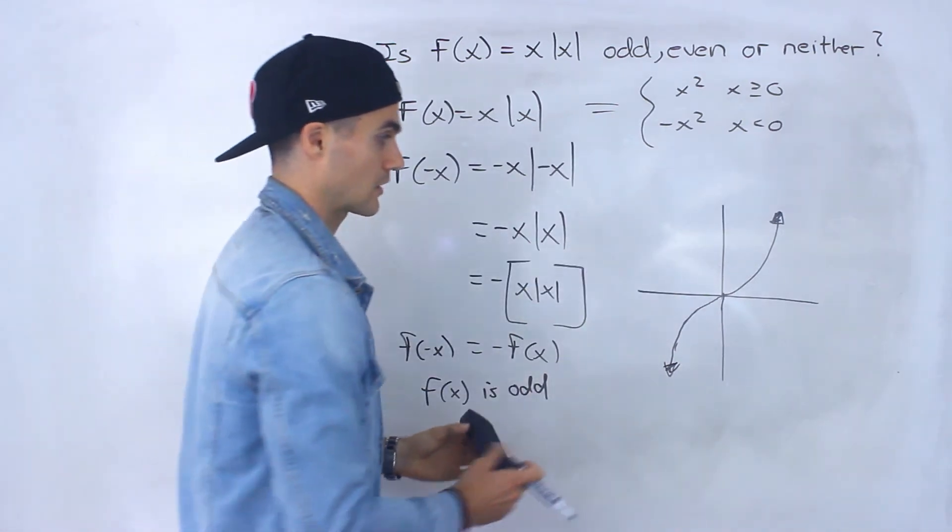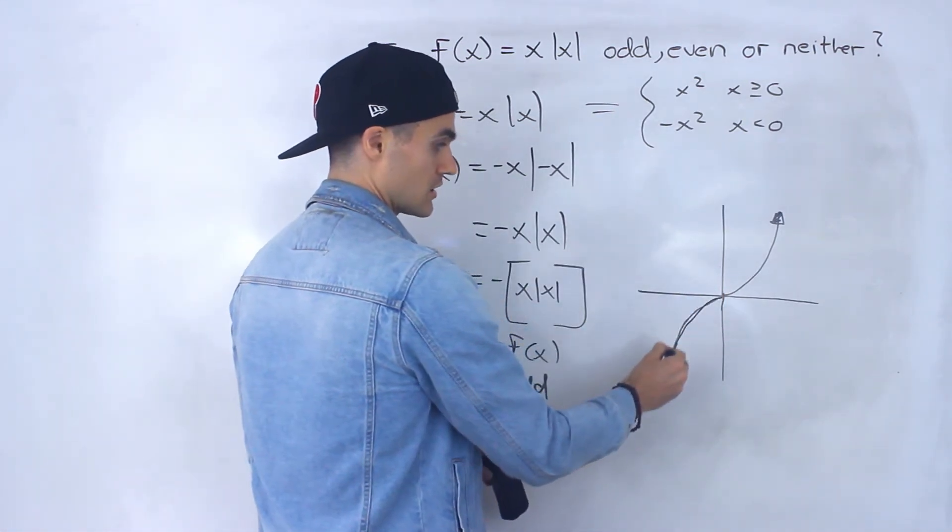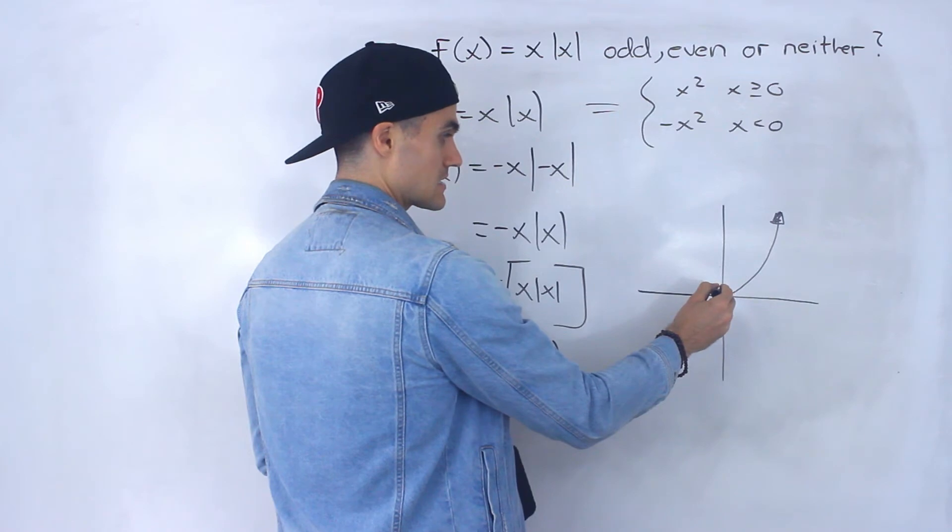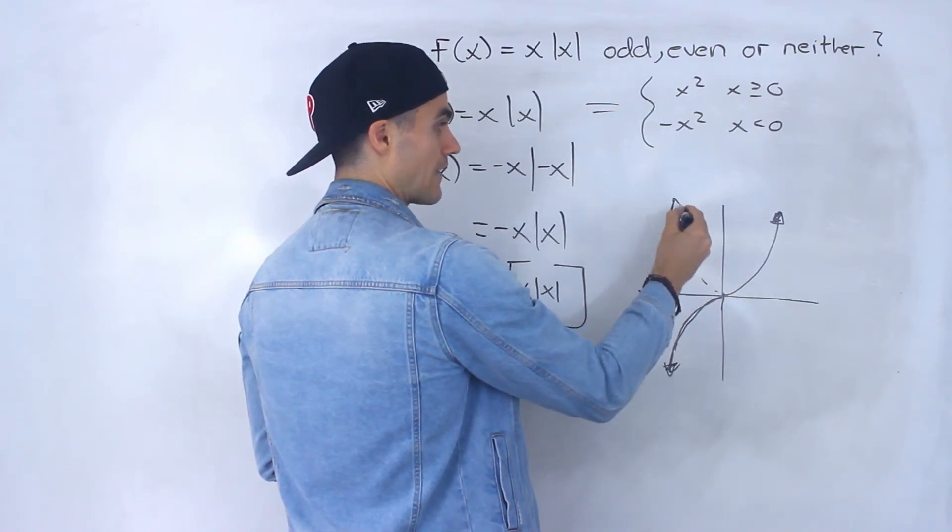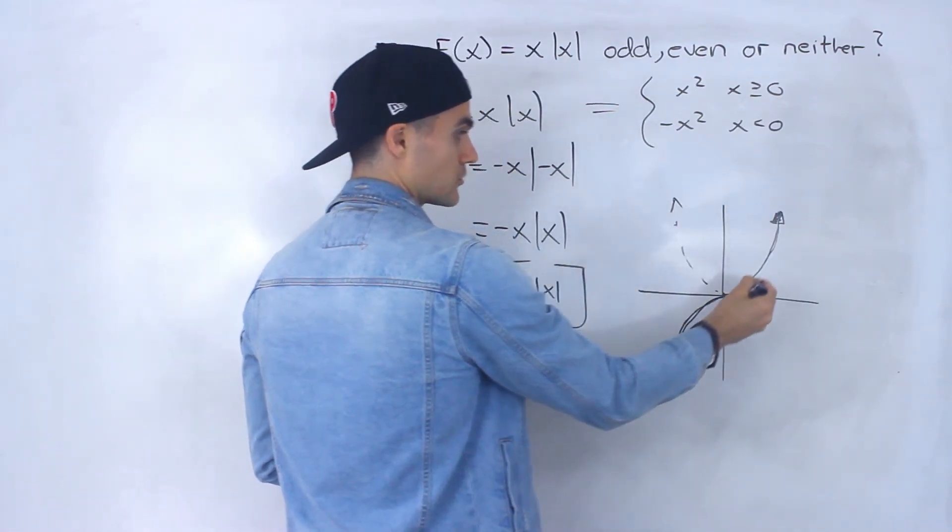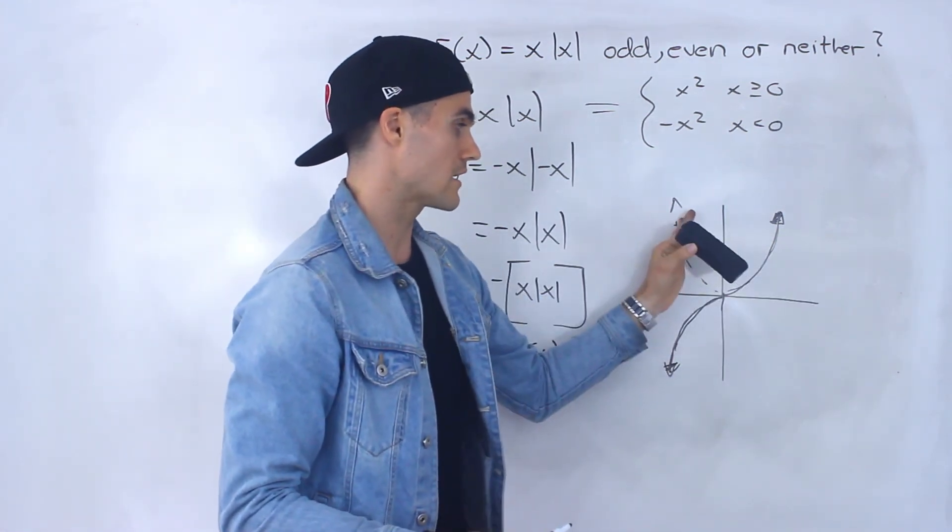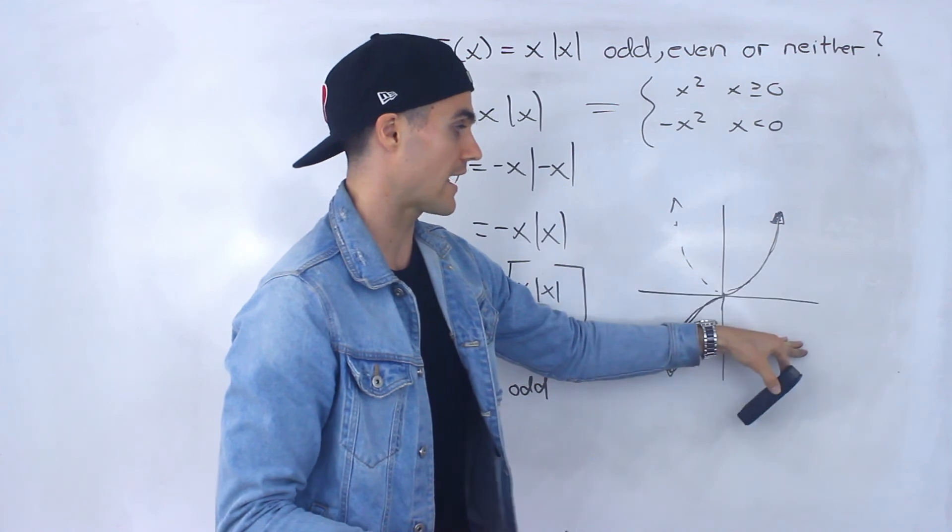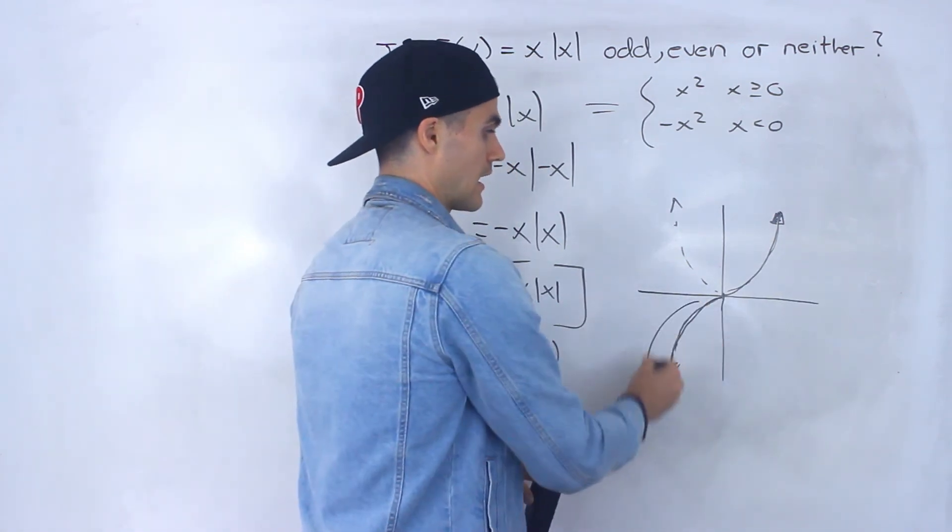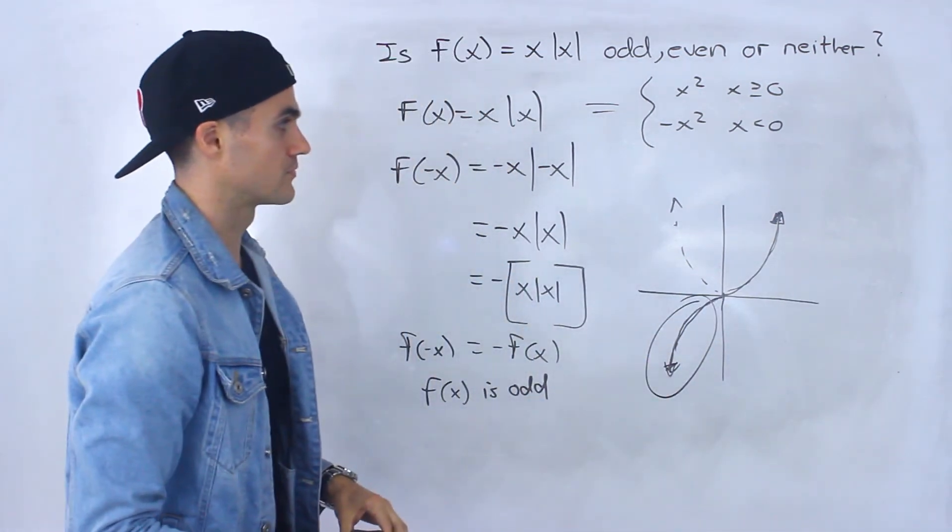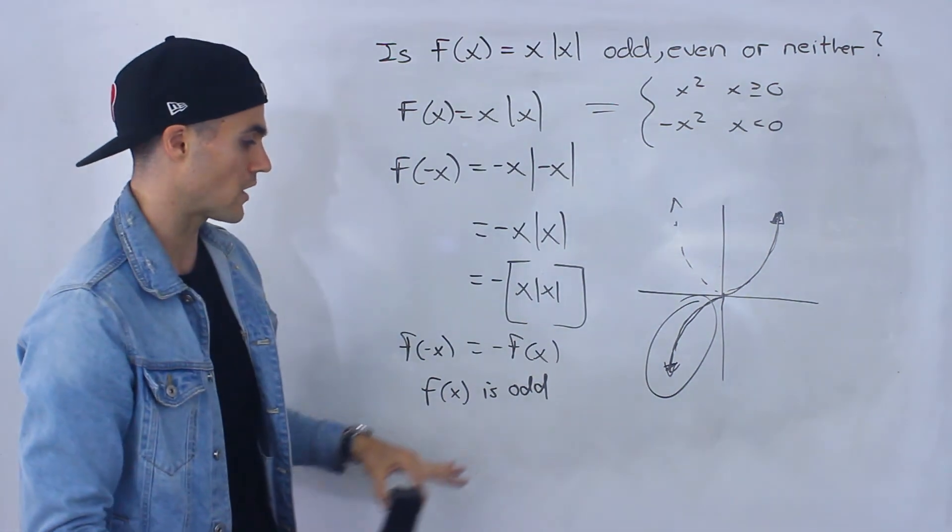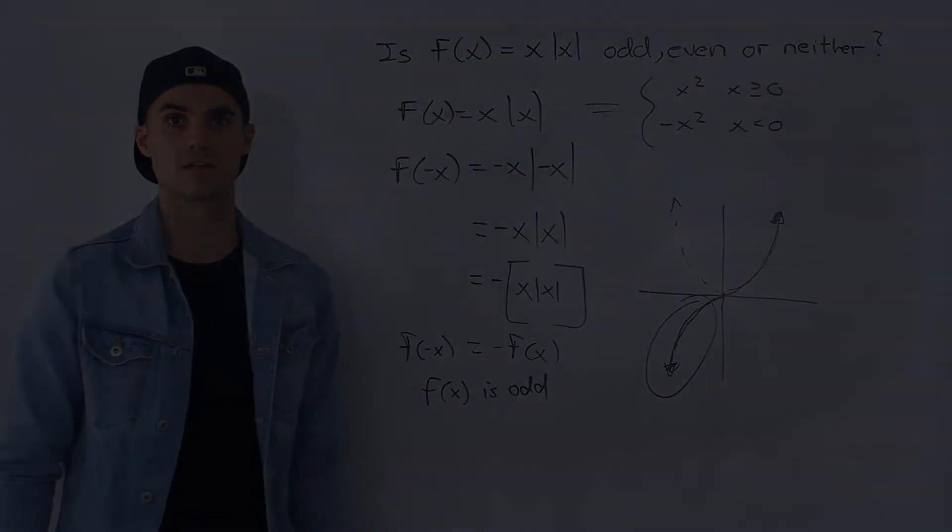If I take this portion, reflect it in the x-axis, I'd end up with that. And then if I reflect in the y-axis, I end up with that. Right, or if I take this, reflect it in the y then reflect it in the x, or reflect it in the x then reflect it in the y, I end up with that portion. So you can visually see as well that this function is odd.